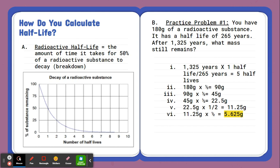Now, we know we started with 180 grams of that radioactive substance. So if it goes through five half-lives, that means I have to half that number five times. So after that total number of years there, that means I'd have only about 5.625 grams left of that radioactive substance.